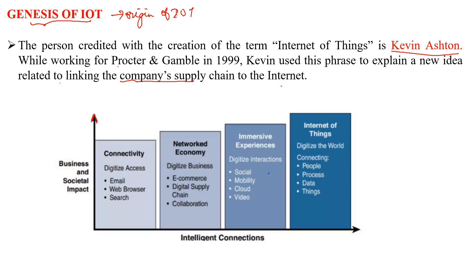You can plot a diagram where the x-axis consists of intelligent connections and the y-axis consists of business and societal impact. The connections can be split into four phases: Phase 1 is connectivity, Phase 2 is network economy, Phase 3 is immersive experience, and Phase 4 is internet of things.